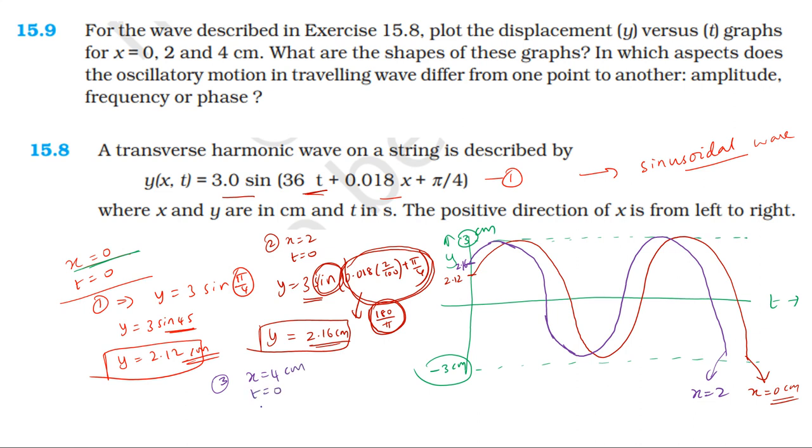As y is equal to 3 into sin of 0.018 times t, 0 into 4 by 100, that is 4 cm. Actually, per centimeter is equal to pi. K is equal to pi. This is equal to 5 by 4. Now, the value is radian. This is 180 by pi. Multiply. This is equal to 2.27 cm.